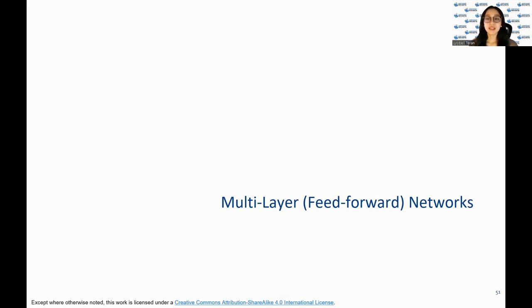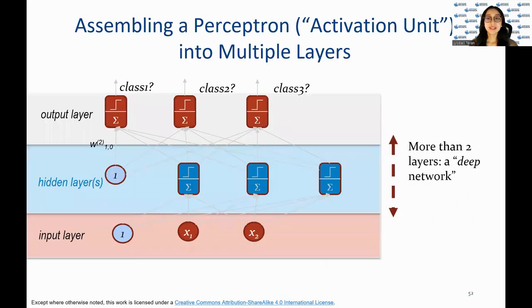Now we will review multi-layer feedforward networks. This slide briefly explains how we can assemble multiple perceptrons, activation units, into multiple layers to build a deep neural network. When we have more than two layers, including output layers, hidden layers, and input layers, it is called a deep network.